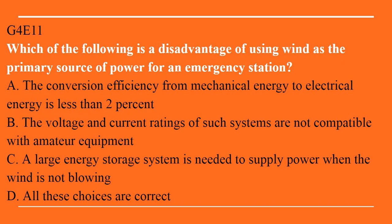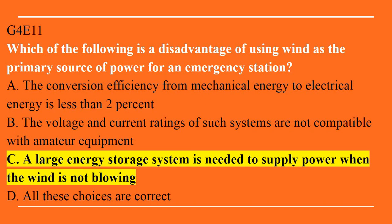G4E11: Which of the following is a disadvantage of using wind as a primary source of power for an emergency station? A. The conversion efficiency from mechanical energy to electrical energy is less than 2%. B. The voltage and current ratings of such systems are not compatible with amateur equipment. C. A large energy storage system is needed to supply power when the wind is not blowing. Or D. All of these choices are correct. Answer is C. A large energy storage system is needed to supply power when the wind is not blowing.